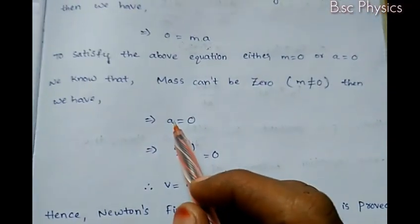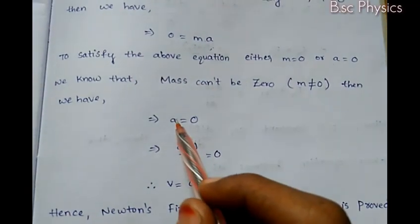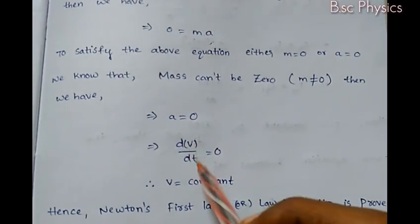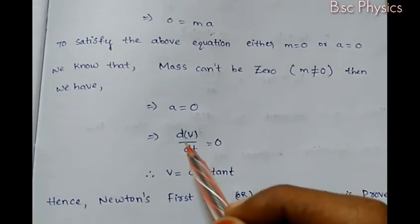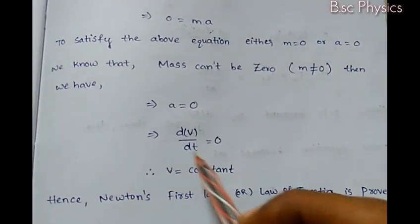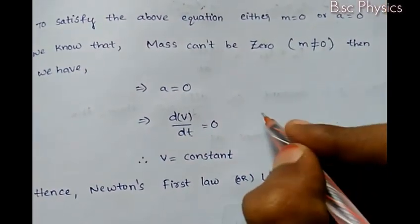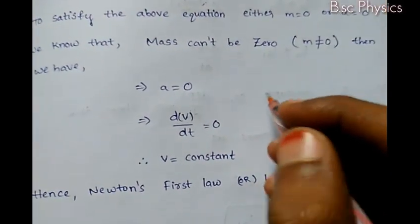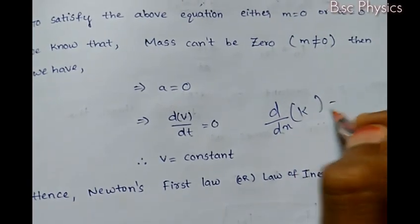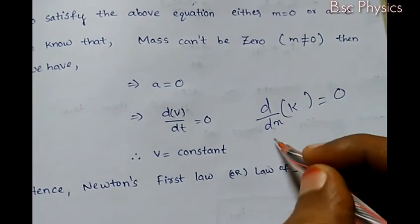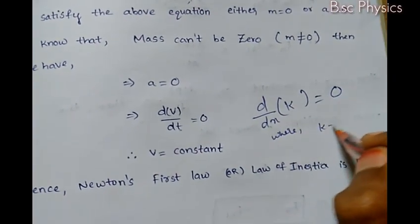If acceleration is zero, then the rate of change of velocity is equal to zero — that is, dv/dt equals zero. According to differentiation, d/dx of a constant k equals zero, where k is a constant.